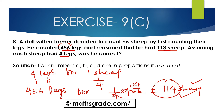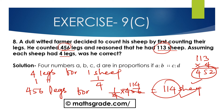No, he was not correct. Because if we multiply 113 with 4 legs, that is 113 multiplied by 4, this gives 452, which is not equal to 456. He counted 456 legs but we got 452 for 113 sheep. So 456 divided by 4 gives 114 sheep. The answer is 114 sheep, not 113.